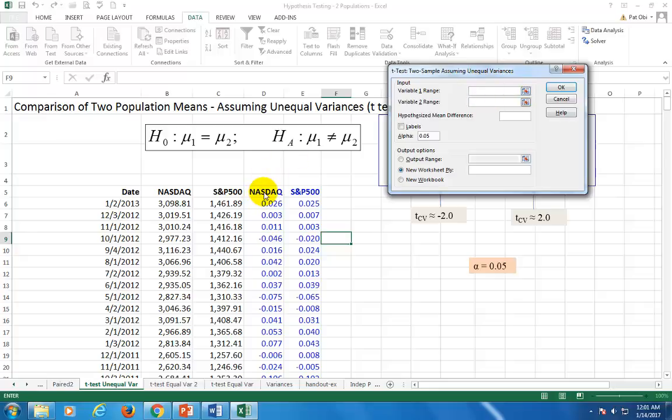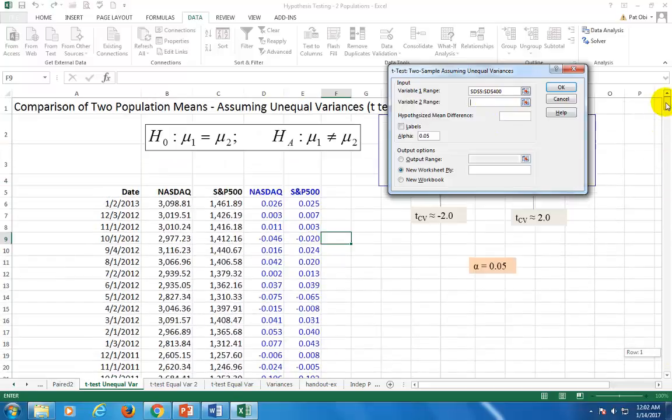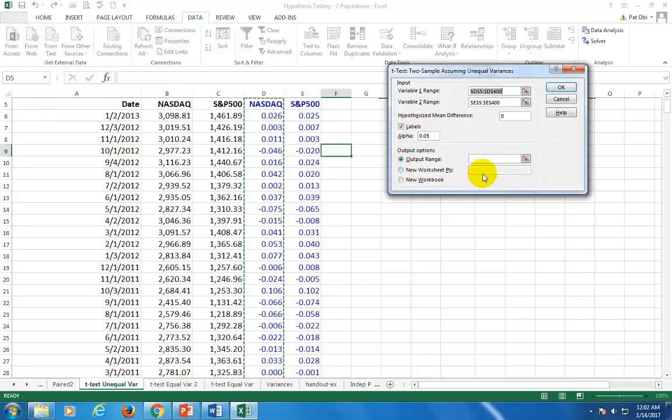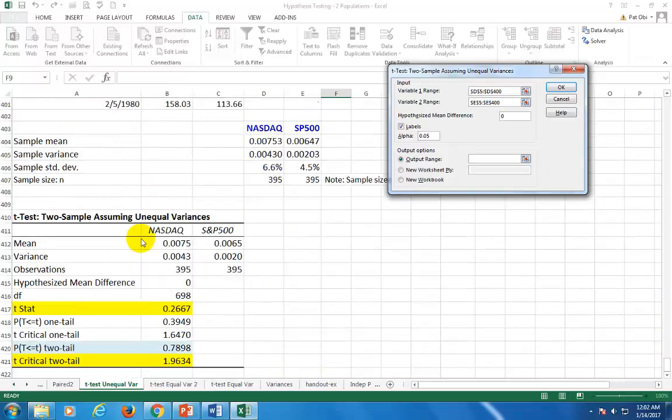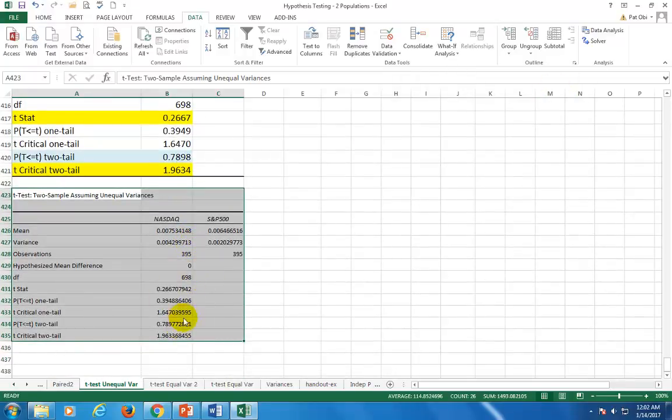For variable one, click on NASDAQ and work it down. For variable two, go back up here to the top, click on S&P 500, and work it down. The hypothesized mean difference is zero because we're hypothesizing that the average performance with respect to their means is the same. Click here for labels, then click here for outputs. While the cursor is blinking, go somewhere in the spreadsheet, preferably to the bottom of the file, and then click OK. That gives us our output.